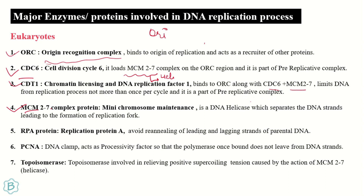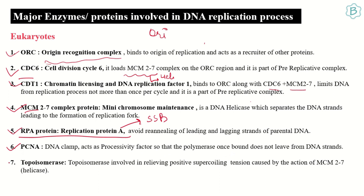MCM2-7 is the helicase, elaborated as mini chromosome maintenance protein. Next is the RPA protein, or replication protein A, which works similarly to SSB proteins by preventing re-annealing of the leading and lagging strands. Then there is PCNA, the DNA clamp, which acts as a processivity factor so that polymerases once bound do not leave the DNA strand, helping proper binding of the DNA polymerases. Topoisomerase again relieves all positive supercoiling caused by the helicase, or in this case MCM2-7.